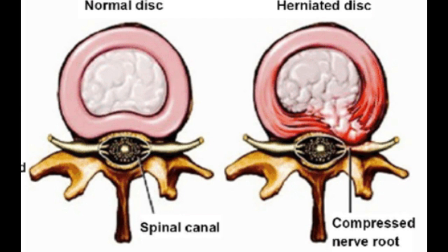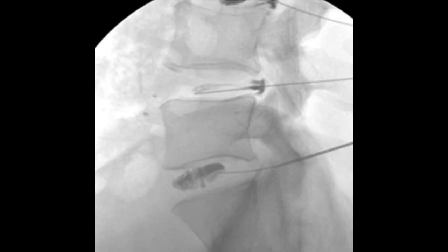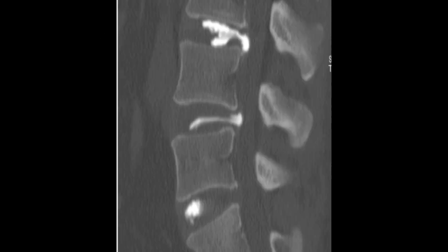Sometimes a radio contrast dye can be used to visualize the disc, which is called discography. This can be followed by a CT scan to visualize the annular tear, which cannot always be visualized even on MRI.